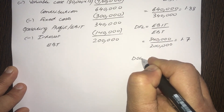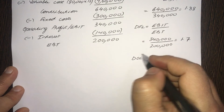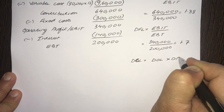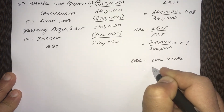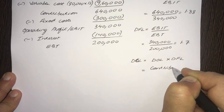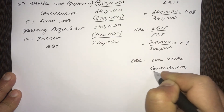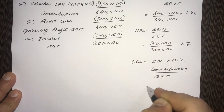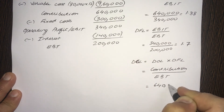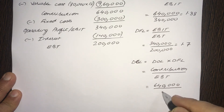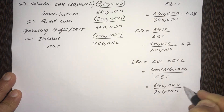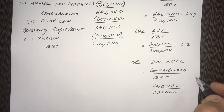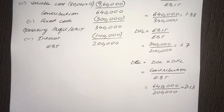And finally, DCL — degree of combined leverage — is equal to DOL into DFL, or contribution divided by EBT. So contribution is 6,40,000 and EBT is 2,00,000. That works out to 2.13 (approximately 3.2, as stated: 2.13).